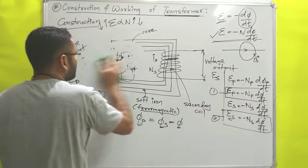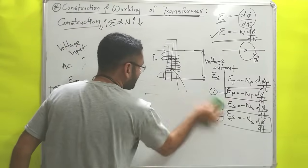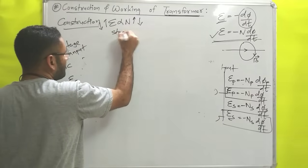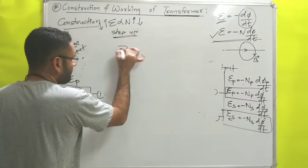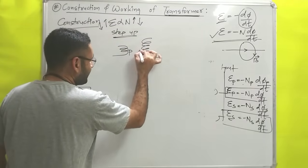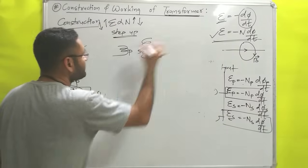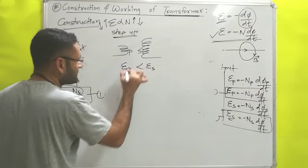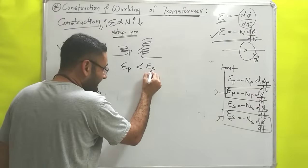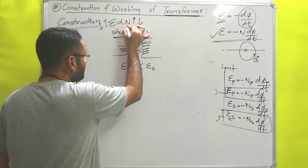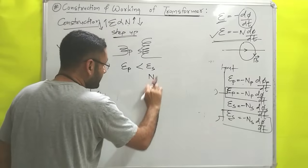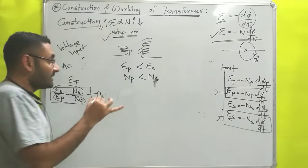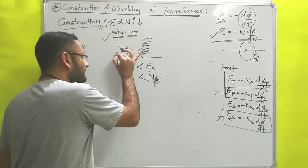We will understand this with step up and step down transformers. For a step up transformer, the secondary side potential ES is more because step up means increasing potential. Since potential is directly proportional to number of turns, the number of turns in the secondary coil is higher than in the primary coil. So in a step up transformer, NS is always greater than NP.